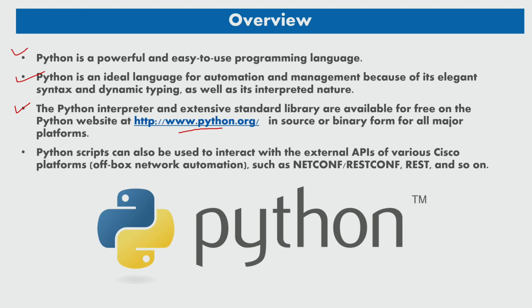In addition to the interpreter, the devices have final libraries that give them direct access to the device's operations, allowing them to run CLI commands or watch for events. For example, you can use the device to run a single CLI command or a batch of CLI commands. Python scripts can also be used to interact with external APIs of various Cisco platforms such as NETCONF, RESTCONF, and REST.